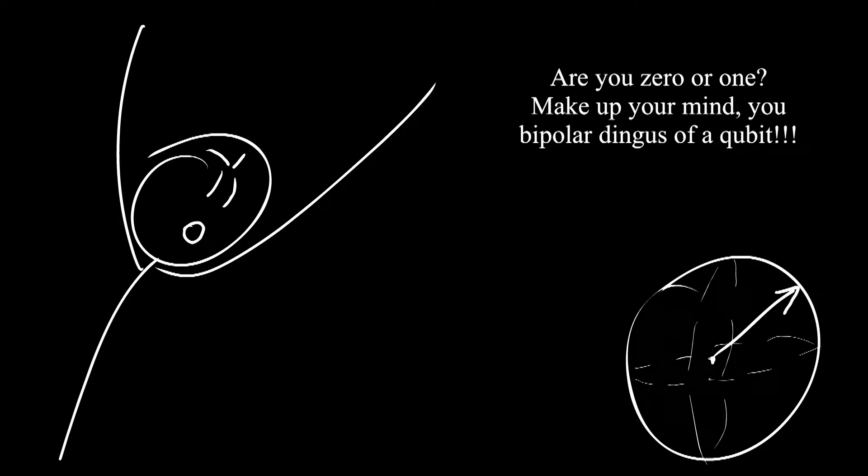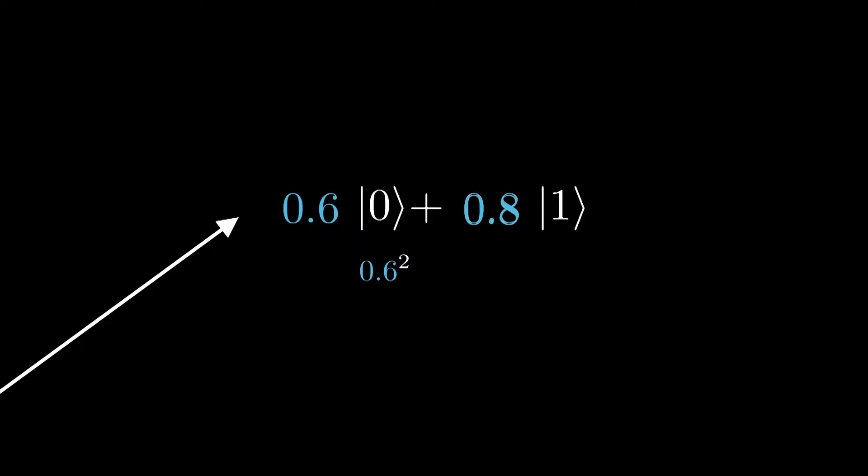Just like my little sister, quantum bits love to play hide and seek, so that when you look at this vector, you can't actually see all of its beautiful colors because it will turn into either 0 or 1. How do you know which one it will turn into? The square of the amplitude of 0 is the probability that it will turn into 0. And the fact that the sum of the probabilities must equal 1 is what restrains the length of this vector to 1.